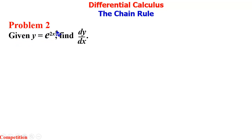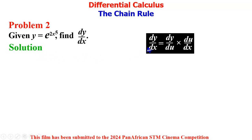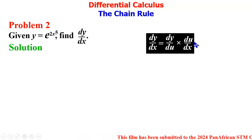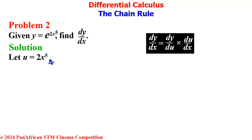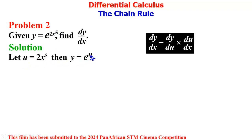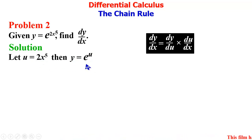In the solution to Problem 2 we introduce u, since we can easily write e raised to the power u. The power of e is going to give us u, so we let u = 2x⁵ and then y = e^u. At that point we find du/dx and dy/du.